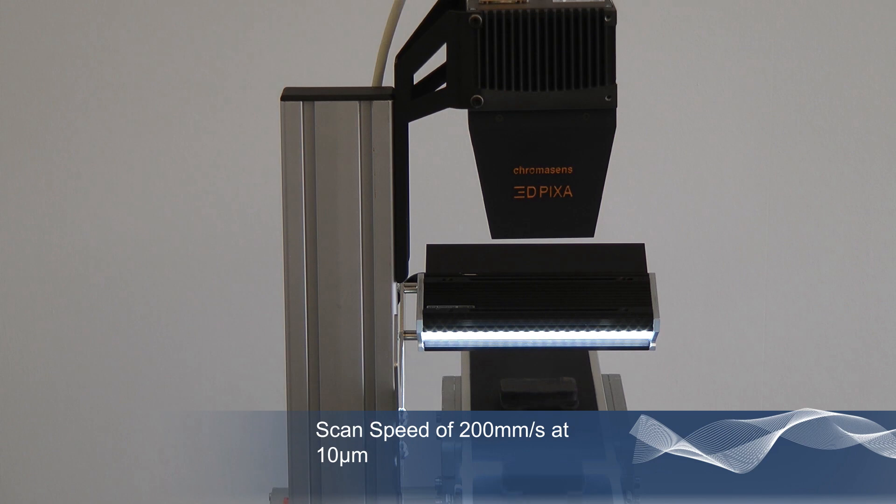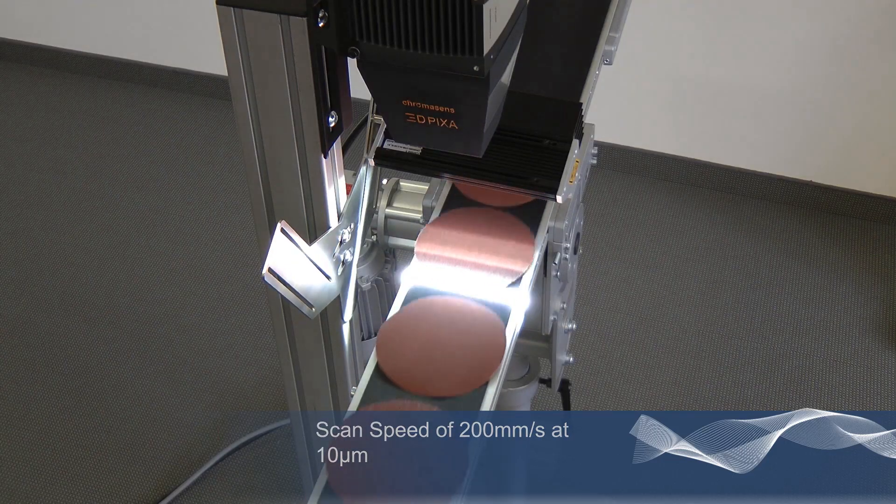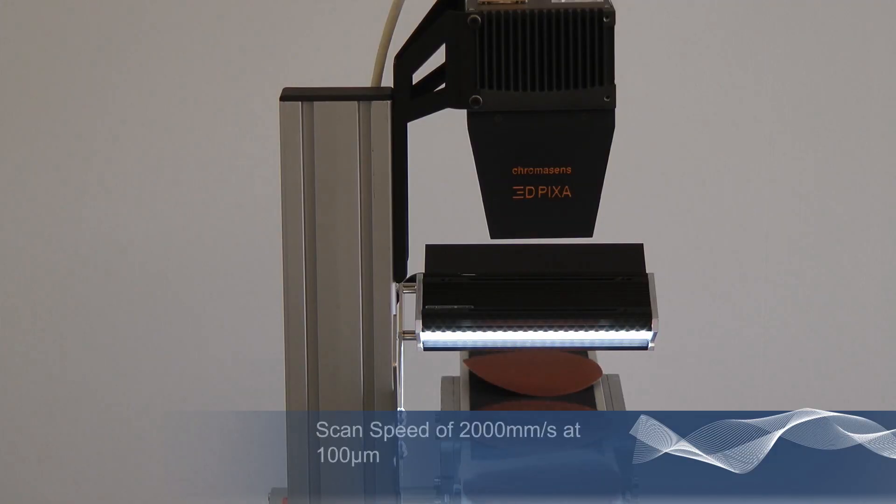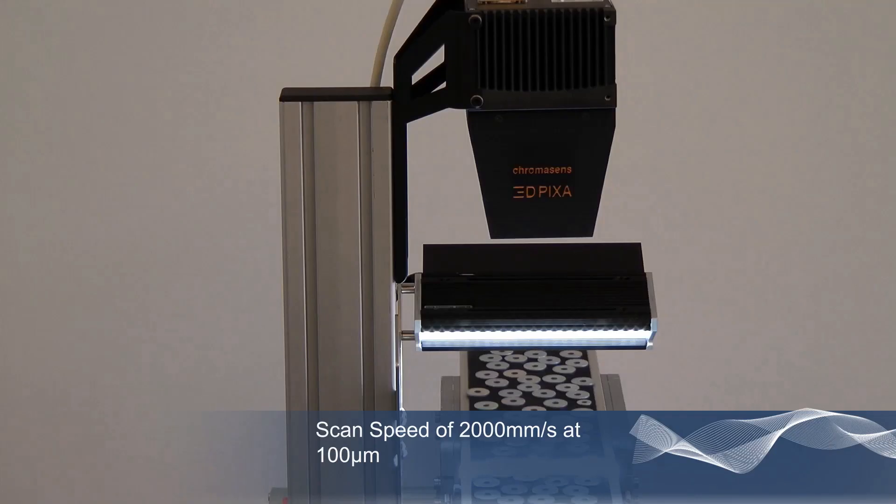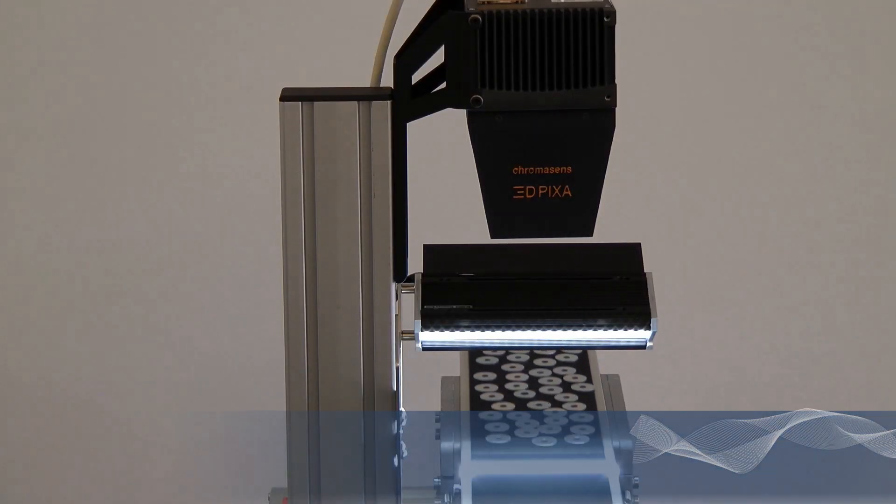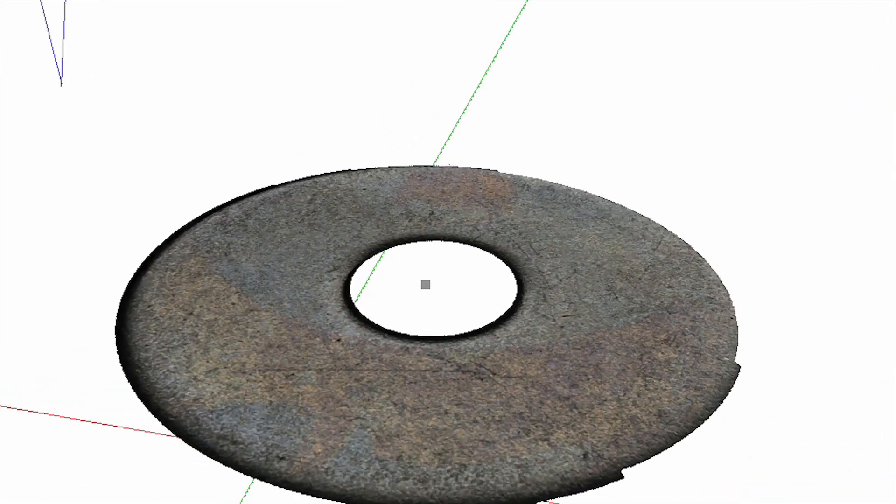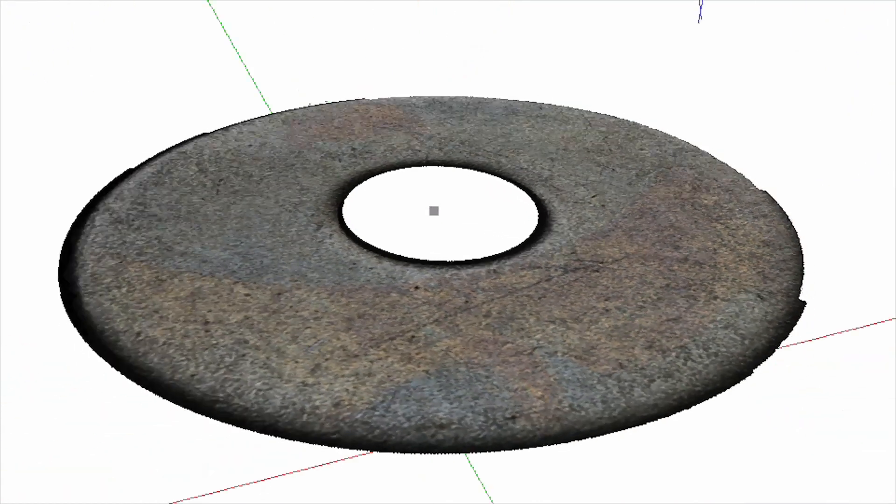The 3D-PIXA captures objects at high speeds. 200 mm per second with 10 micron pixel resolution and 2000 mm per second with 100 micron resolution. The 3D data are calculated in real time using graphical processing units.